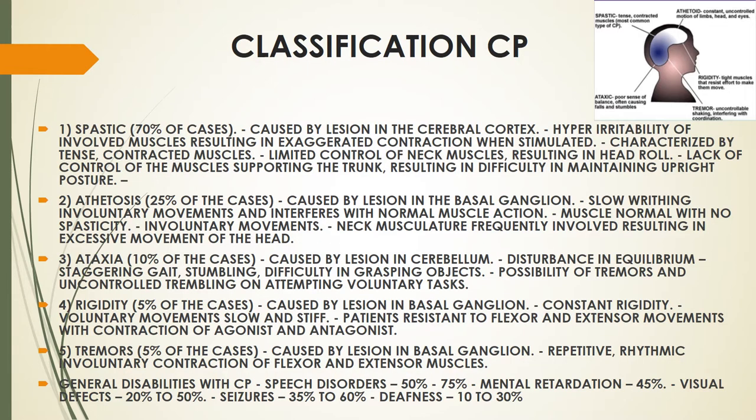Cerebral palsy is classified into five types: spastic, athetosis, ataxia, rigidity, and tremors.